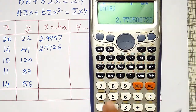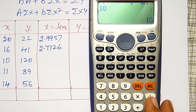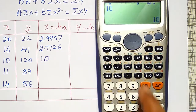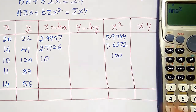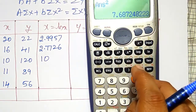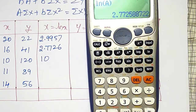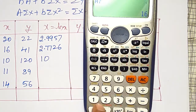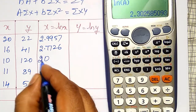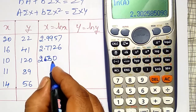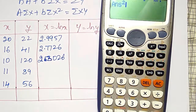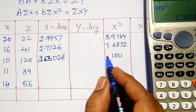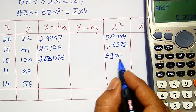For x = 10: ln(10) = 2.3026 and its square = 5.3018. Please note: I initially made an error and need to correct that — ln(10) is 2.3026, not 10.